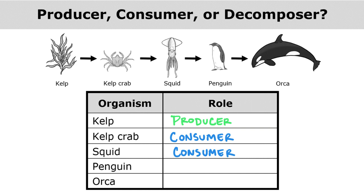The squid is consumed by the penguin, and the penguin is consumed by the orca. So the kelp is our producer, and all of the other animals in this food chain are consumers, and that's very common.